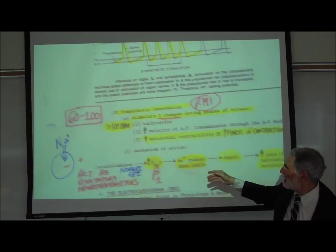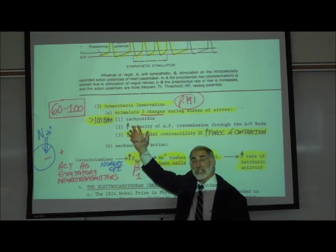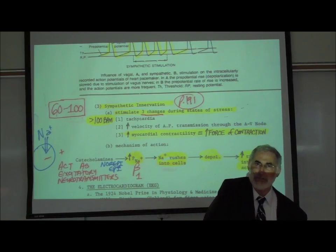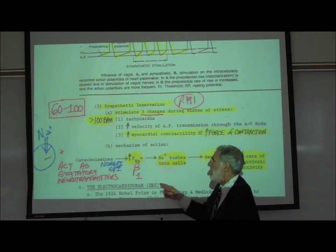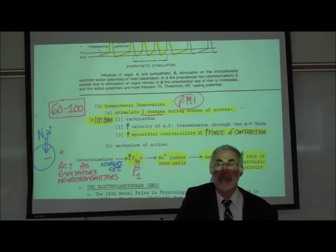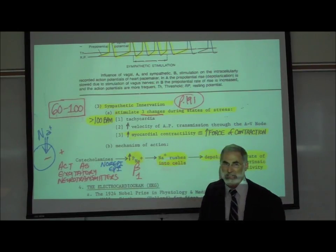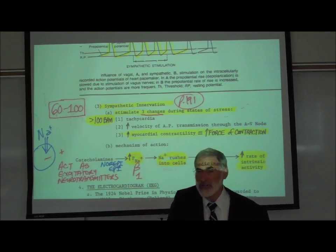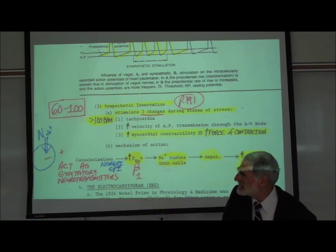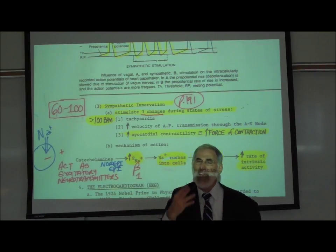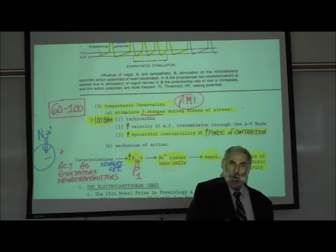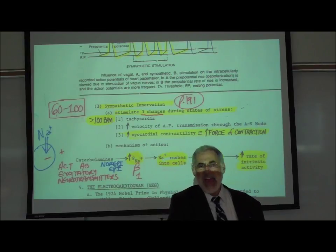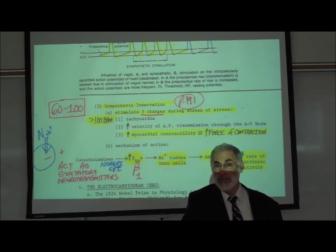Sympathetic autonomic motor neurons releasing catecholamine neurotransmitters not only speed up the heart rate (tachycardia), but they also increase the velocity at which the action potential travels through the AV node. Additionally, the sympathetic autonomic motor neurons releasing catecholamines increase myocardial contractility — meaning the force of contraction. Increasing the force of contraction increases what's called stroke volume. So the sympathetic autonomic motor neurons have three primary actions on the heart: they speed up heart rate, increase action potential conduction velocity through the AV node, and increase myocardial contractility.